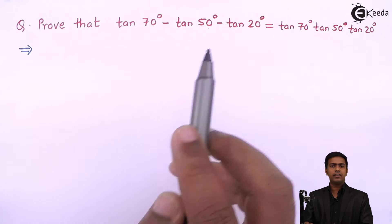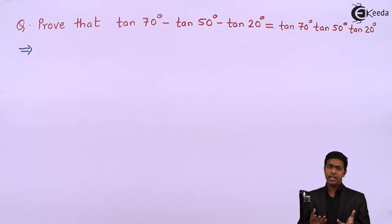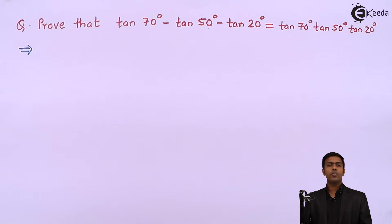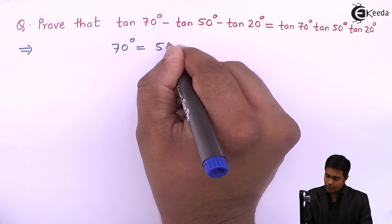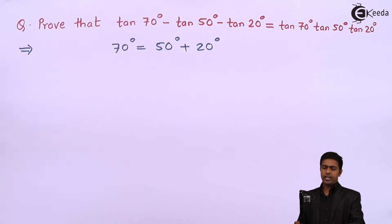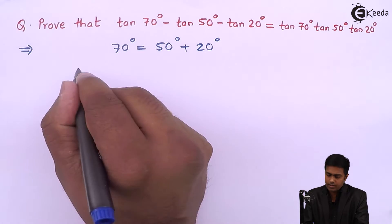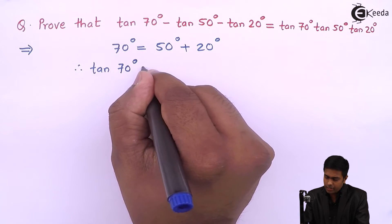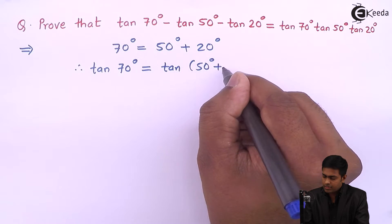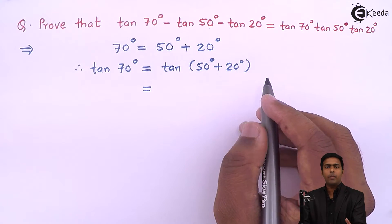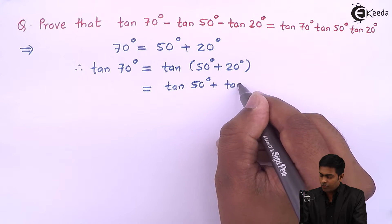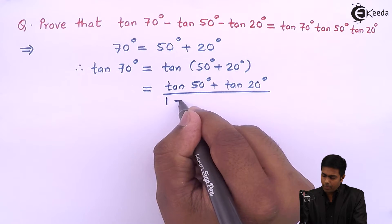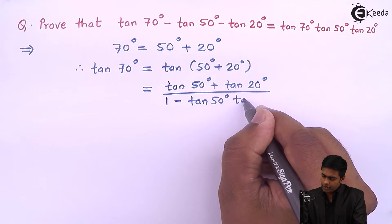In such cases, we start by considering the relationship between the angles. We can write 70° = 50° + 20°. Taking tan on both sides, we get tan 70° = tan(50° + 20°). On the right-hand side, we apply the formula tan(A + B) = (tan A + tan B) / (1 − tan A · tan B), giving us (tan 50° + tan 20°) / (1 − tan 50° · tan 20°).